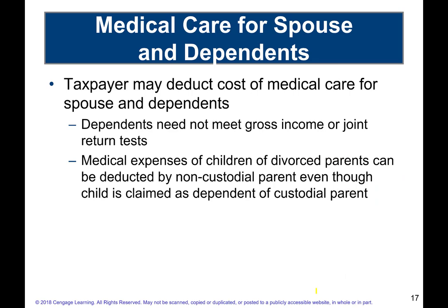You can take medical expenses for spouses and dependents. Importantly, dependents don't need to meet the gross income or joint return tests to have their medical expenses deducted. Even if someone wouldn't qualify as a dependent because they filed a joint return or had too much gross income, you can still deduct medical expenses you paid for them, subject to the AGI threshold.